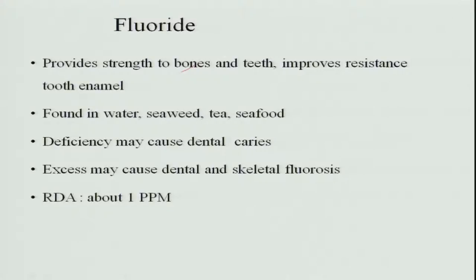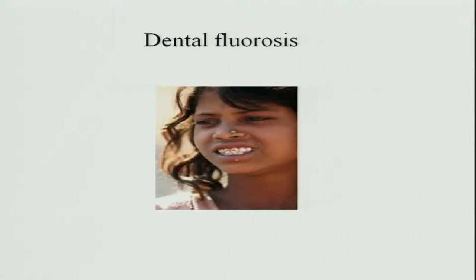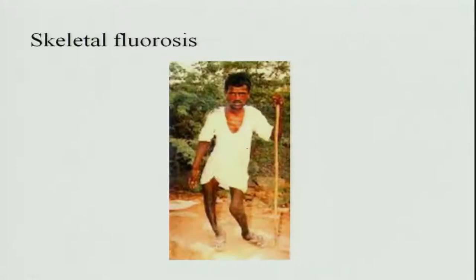Fluoride affects the skeleton and teeth — it provides strength to bones and teeth and improves resistance of tooth enamel. Fluorine is found in water, seaweed, tea, and seafood. Deficiency may cause dental caries, and excess may cause dental and skeletal fluorosis. The recommended dietary allowance is 1 part per million. Dental fluorosis causes discoloration, pitting, and mottling of teeth — permanent tooth damage. Skeletal fluorosis from excess fluorine causes severe bone deformation, leaving individuals unable to walk without assistance.